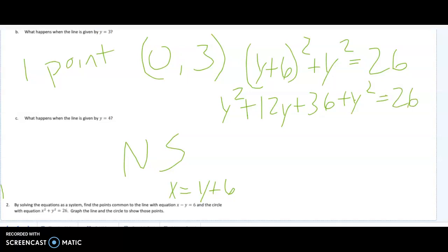Well, y plus 6 squared is simply y squared plus 12y plus 36 plus y squared equals 26. And as we solve that, it will be 2y squared plus 12y. If I move this 26 over here, it will be plus 10. Since I know that all of those are divisible by 2, I'm going to divide by 2 and get y squared plus 6y plus 5.